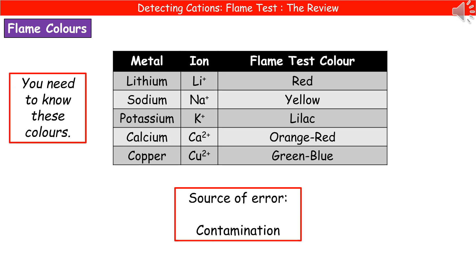You do need to remember some colours and the metals they refer to — there are five to know. Lithium burns with a red flame. Sodium is yellow. Potassium is lilac. Calcium is an orangey red. And copper is a green-blue colour. Make sure you learn those — put them on a flashcard with the metal name on one side and the flame test colour on the other, and test yourself.